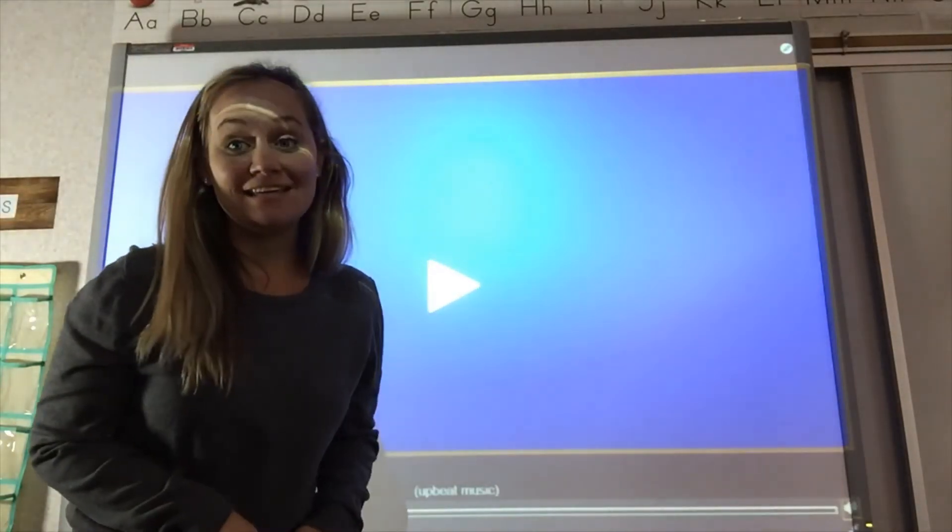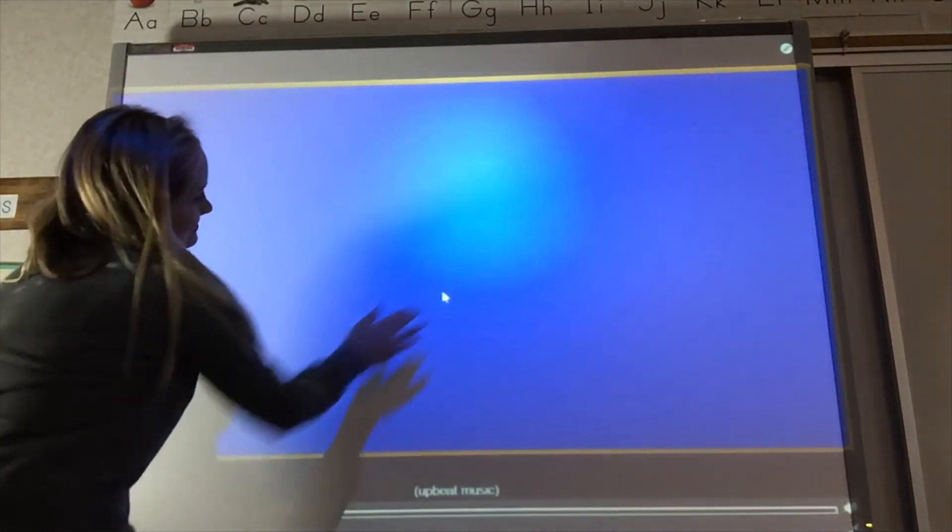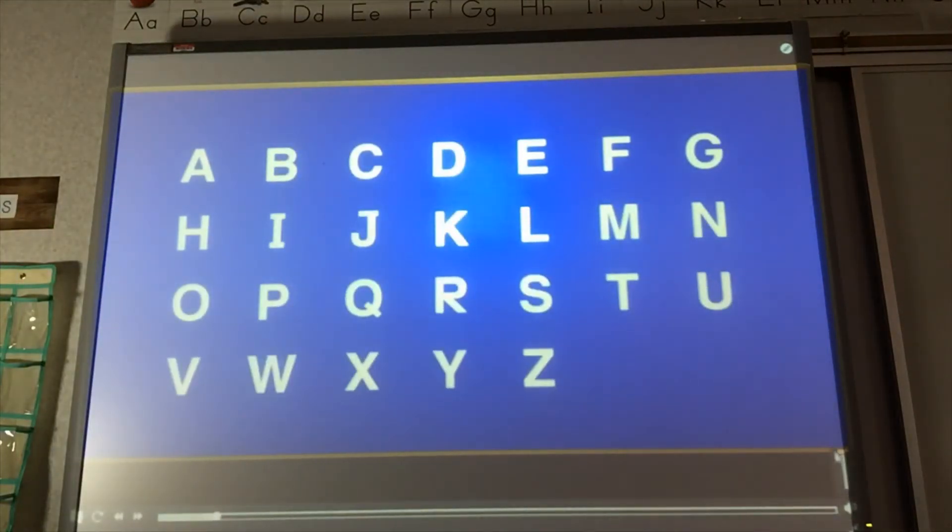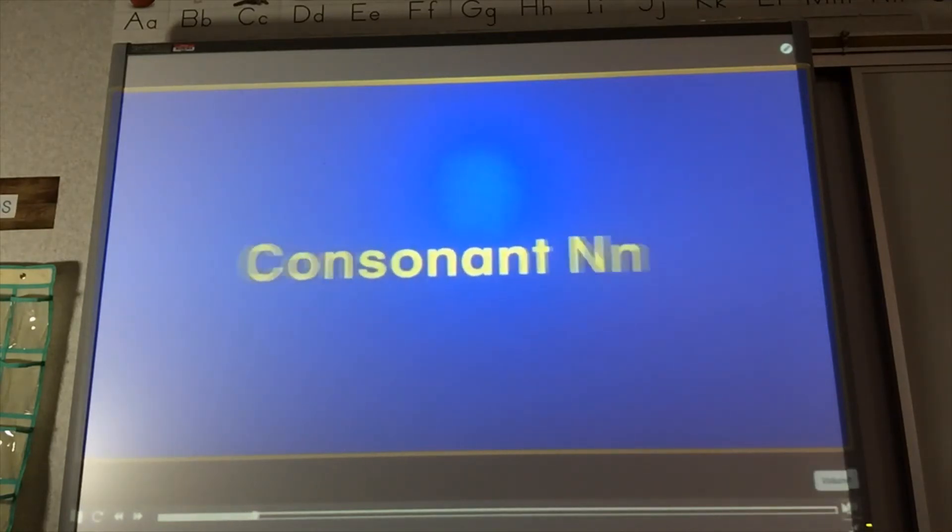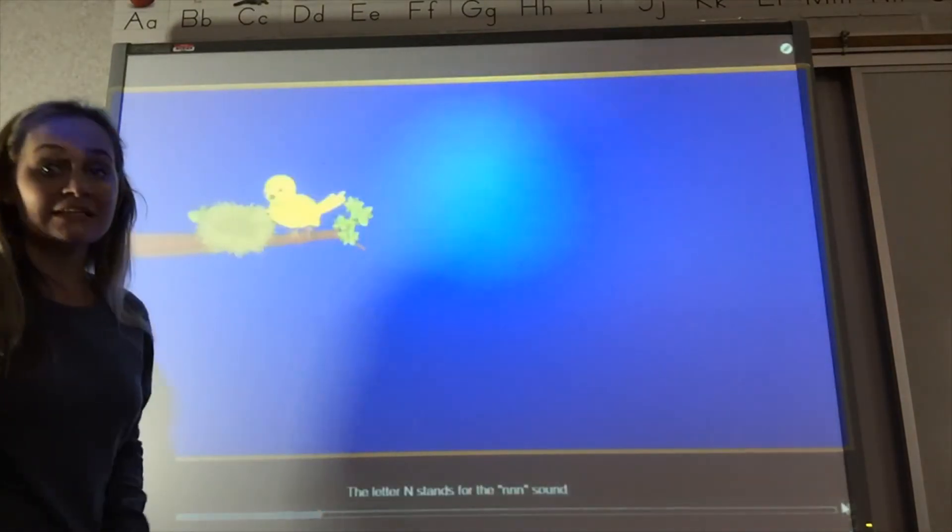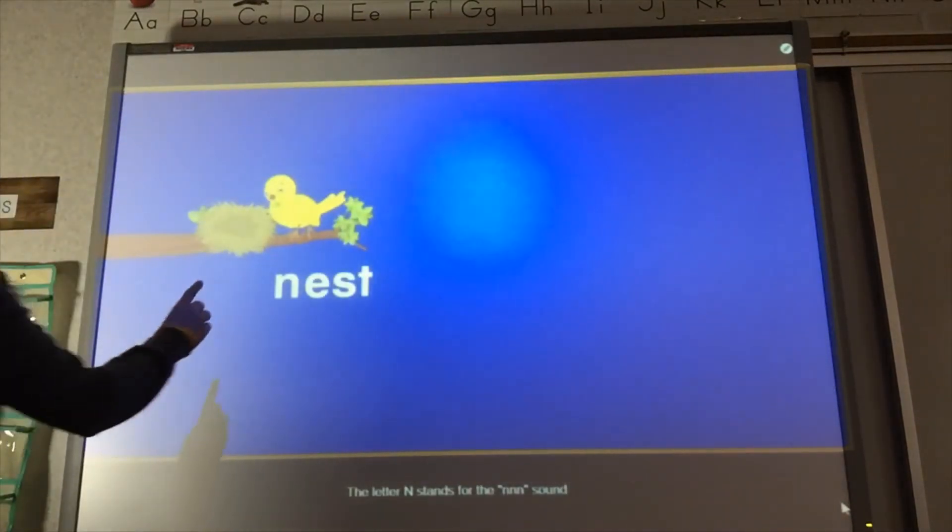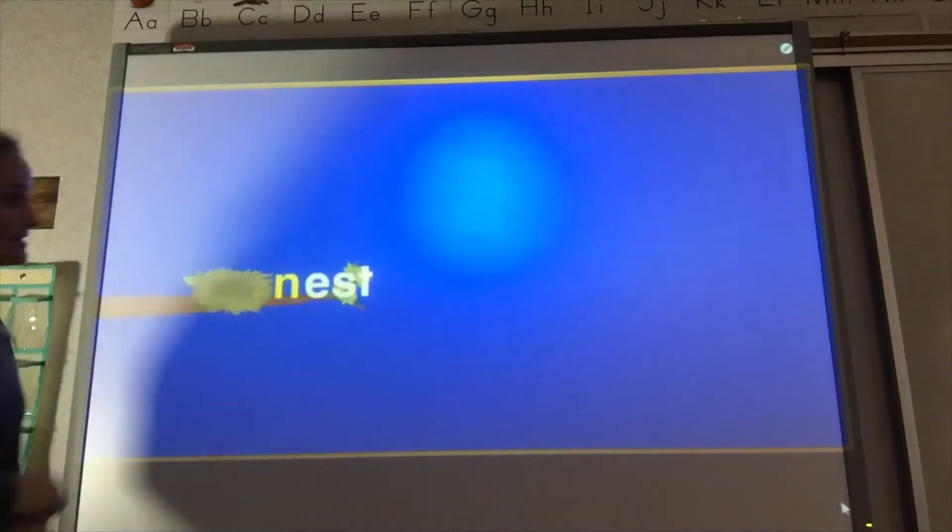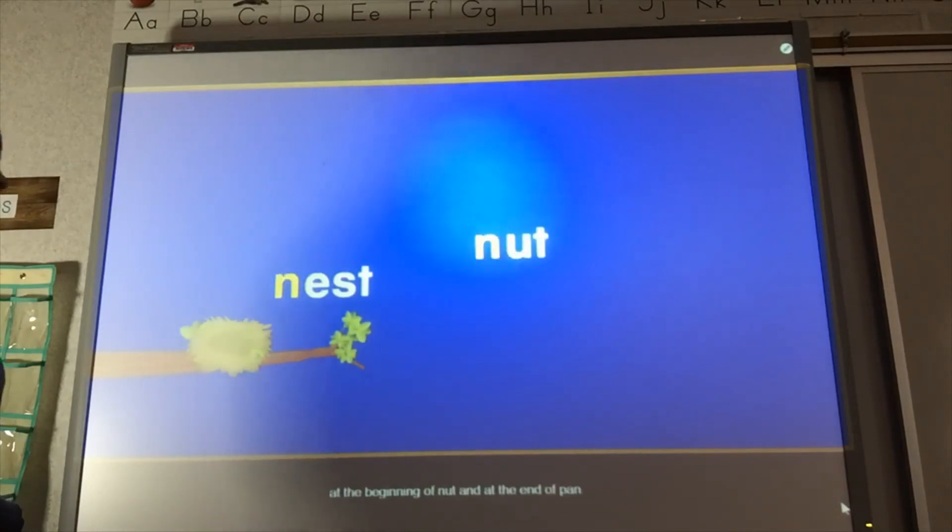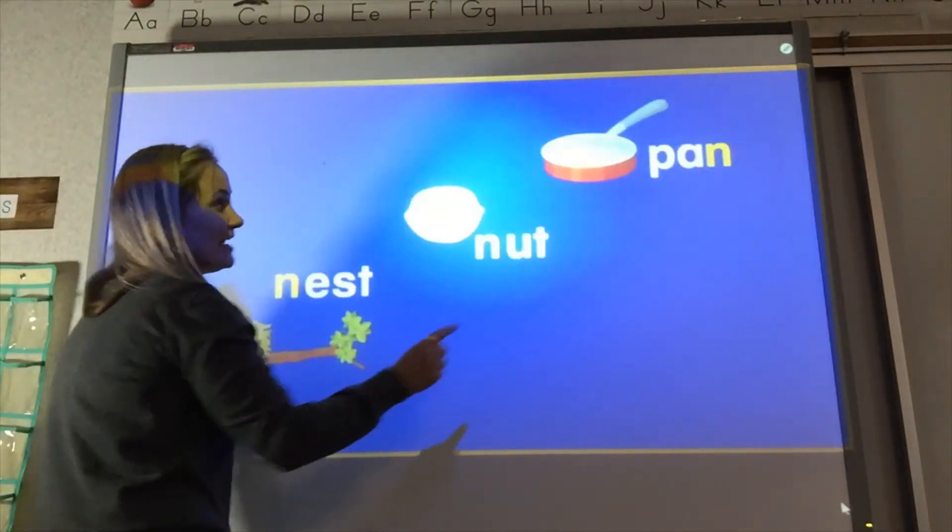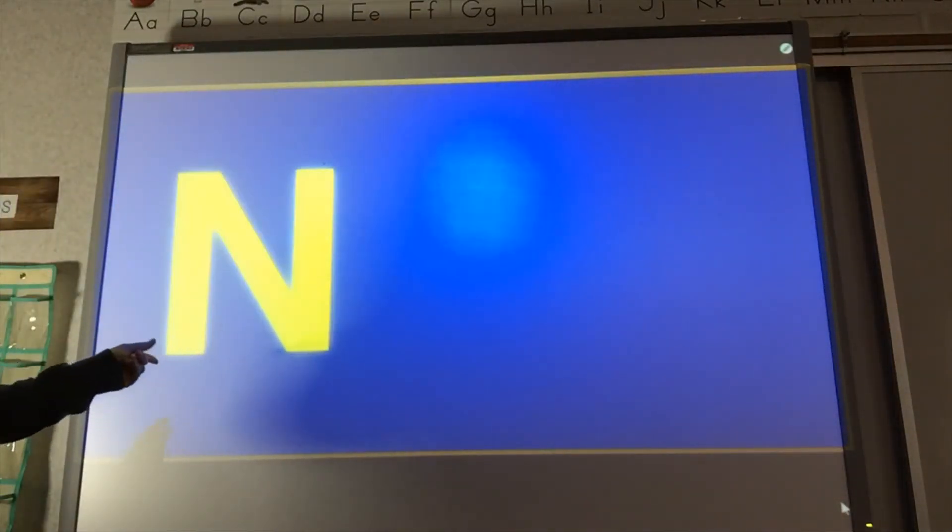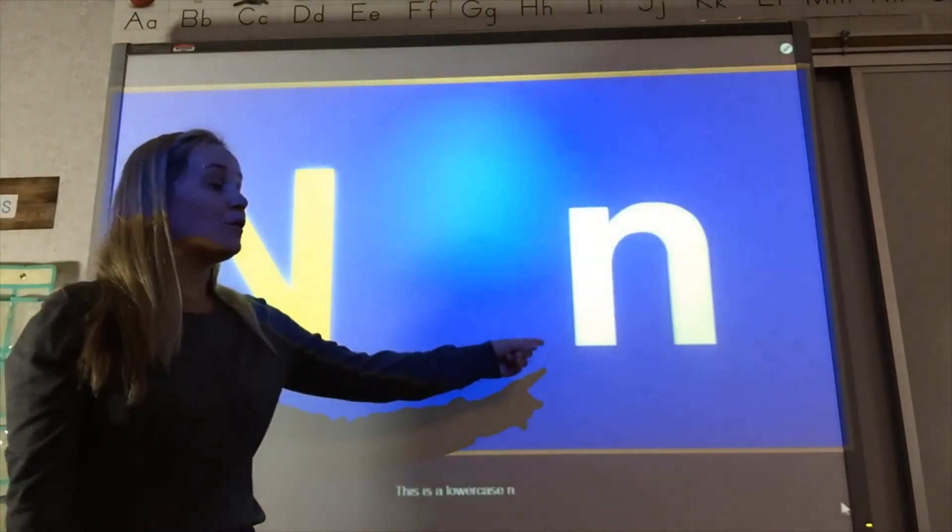Now let's practice the letter N. N. The letter N is a consonant. N says N. Like in the beginning of nest. Ness. You can also hear the N sound at the beginning of nut and at the end of pan. This is an uppercase N and this is a lowercase N.